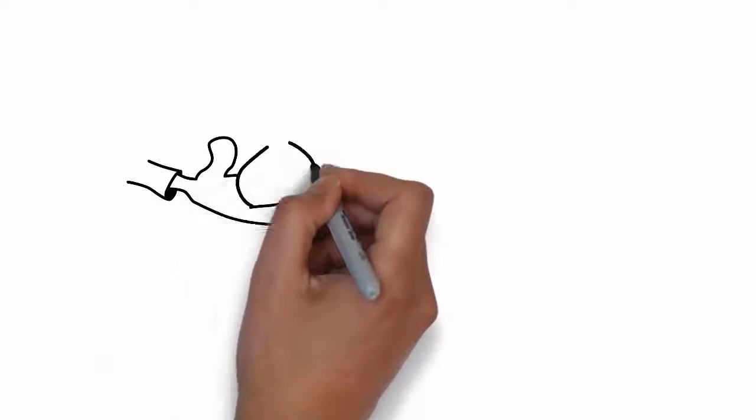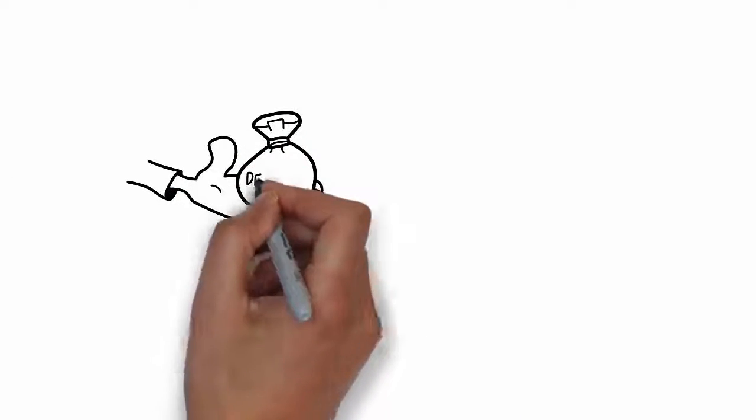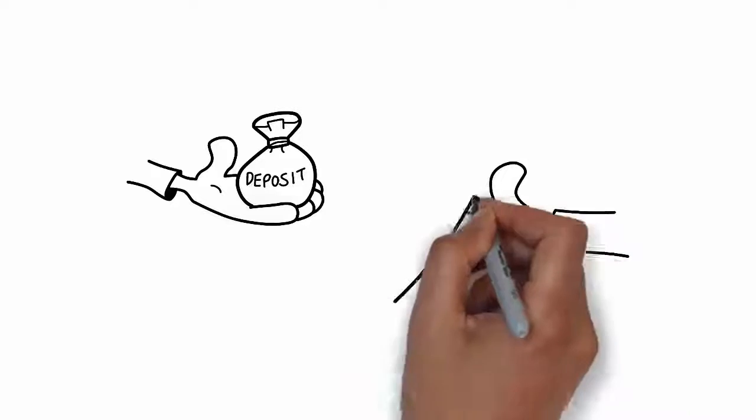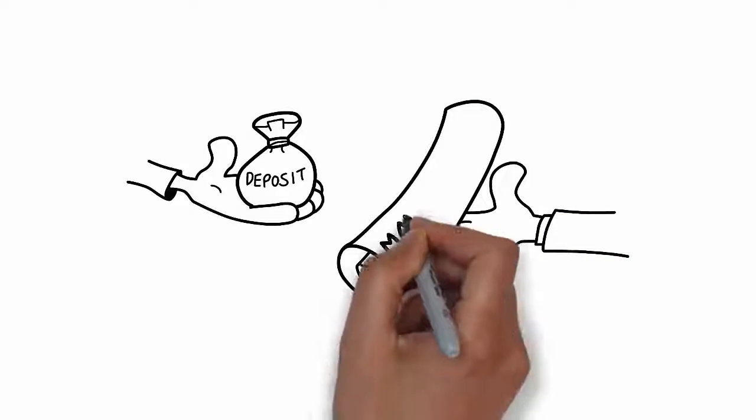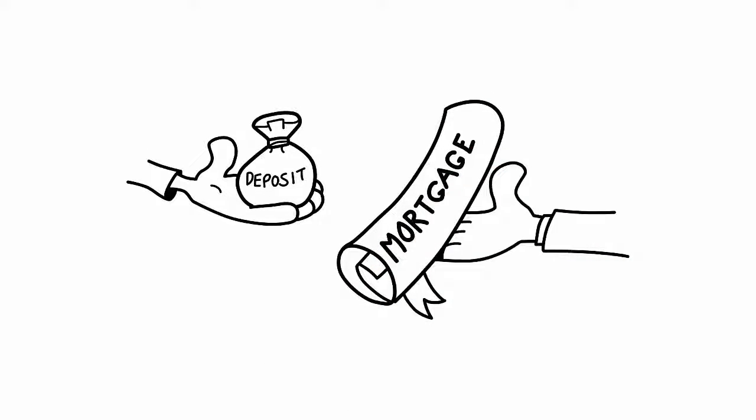When we bought our house, it was straightforward. There were plenty of mortgages about and you only needed a small deposit. As long as you had a good job, it was quite easy to buy your own house.